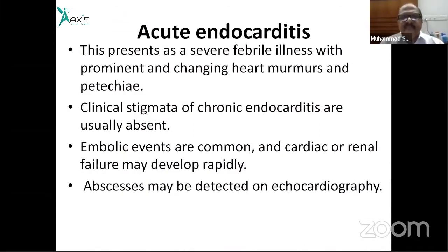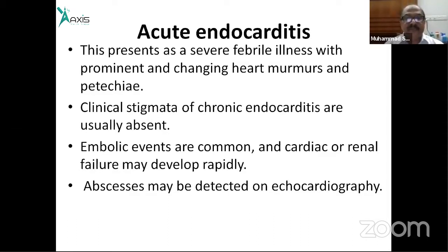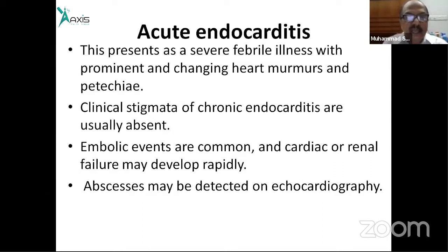In acute endocarditis, the patient presents with a severe febrile illness with prominent changes in heart murmurs. Clinical stigmata of chronic endocarditis are usually absent, embolic events are common, and cardiac and renal failure may develop rapidly. Abscesses may be detected on echocardiogram.